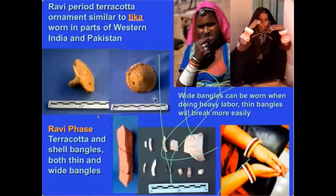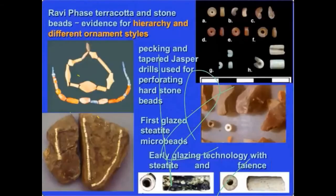The earliest tikka is found in the Ravi phase at Harappa — a hollow clay object that looks like a flower. Beads from the Ravi phase are made from carnelian from Gujarat, some from amazonite from the north, as well as steatite or soapstone beads that were fired with specialized glazing technologies. We also have the earliest evidence for faience from the Ravi phase — some of the earliest faience found in the Indus Valley — showing that technologies were being developed to create artificial materials and to modify natural materials in very unique ways.